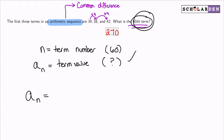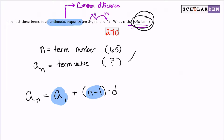The formula: any term in an arithmetic sequence equals your first term, plus (n minus 1) times the common difference. The reason we subtract one is that starting from term 1, to reach term 60 you only need 59 jumps. You multiply those 59 jumps by the common difference — adding 4, 59 times, not 60.